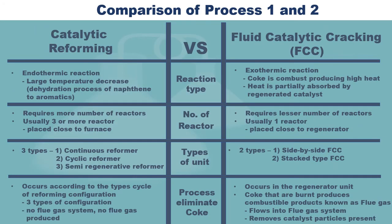To compare these two processes, we look into four main criteria: the reaction type, number of reactors used, type of unit configuration, and the process of coke elimination. Catalytic reforming undergoes an endothermic reaction as a large decrease in temperature occurs when the dehydrogenation of naphthenes to aromatics takes place. The FCC, on the other hand, undergoes an exothermic reaction when coke is combusted, producing higher heat. The heat is partially absorbed by the regenerated catalysts.